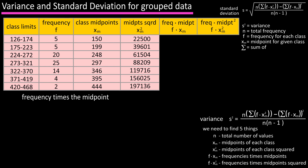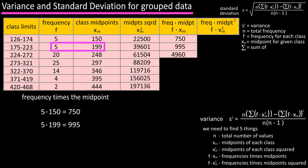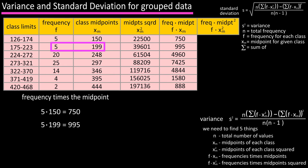For column 5 we have the frequency for each class times the midpoint for each class. For class 1: frequency 5 × midpoint 150 = 750. For class 2: frequency 5 × midpoint 199 = 995. Continue this process for the remaining classes as shown in the table.